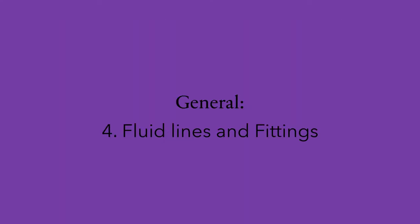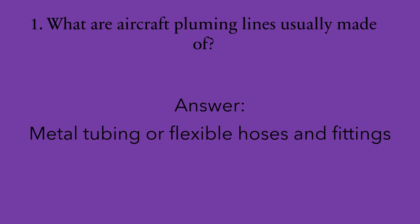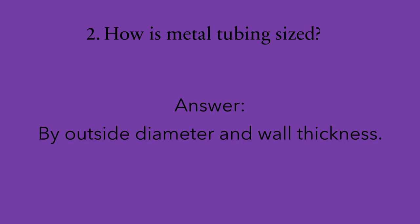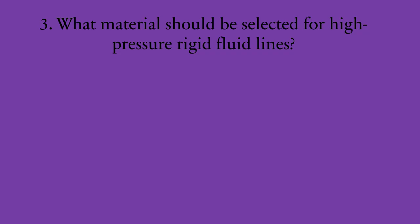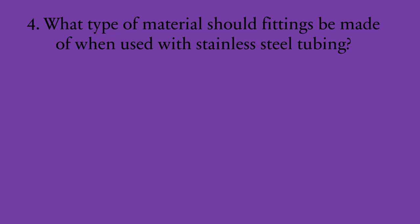Section four: fluid lines and fittings. Number one: what are aircraft plumbing lines usually made of? The answer is metal tubing or flexible hoses and fittings. Number two: how is metal tubing sized? By outside diameter and wall thickness. Number three: what material should be selected for high-pressure rigid fluid lines? Annealed or one-quarter-hard corrosion-resistant steel. Number four: what type of material should fittings be made of when used with stainless steel tubing? The answer is stainless steel.